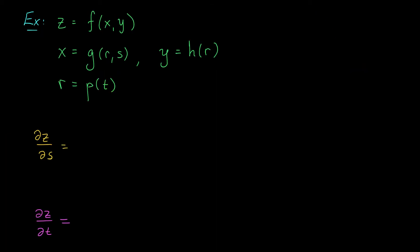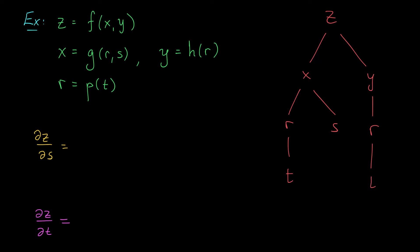You may also run into the situation where your intermediate variables each depend on a different number of independent variables. Take this example: z depends on x and y, x depends on r and s, whereas y only depends on r, and r in turn depends on t. Looks complicated, but we can approach it in exactly the same way, with a diagram. z is at the top, x and y are in the middle, x depends on r and s so we have two branches here, whereas y just depends on r, and finally r depends on t — so we have a t here and a t here.